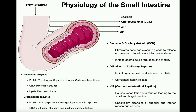Now for an intro to the physiology of the small intestine. We have nutrients incoming as chyme — the stomach squirts chyme into the duodenum. The small intestine itself is going to release several hormones: secretin, cholecystokinin or CCK, GIP, and VIP. Let's talk about the stimulus for release of each of these and what they do.